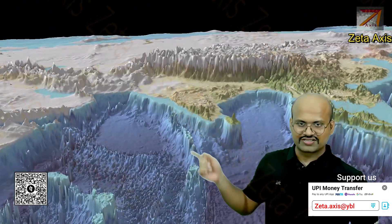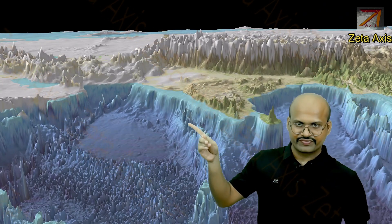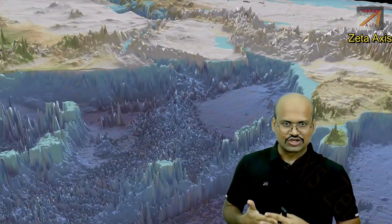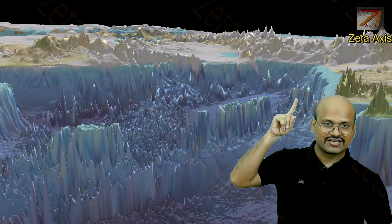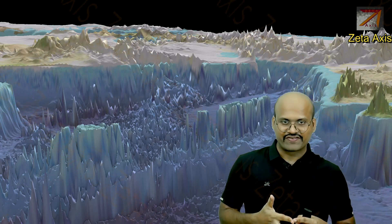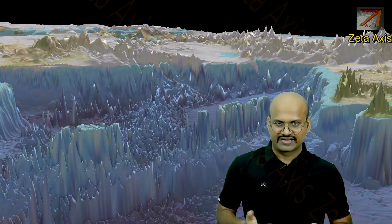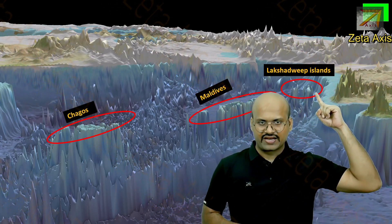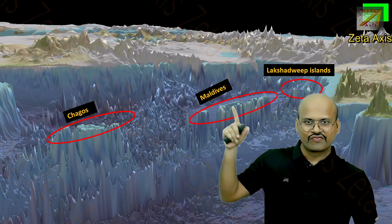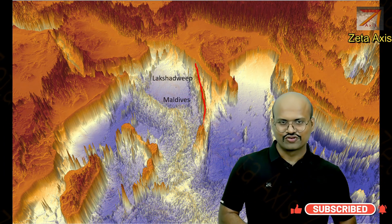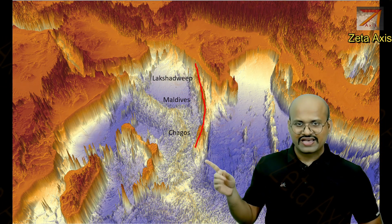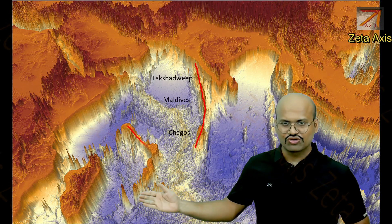Now to better understand how these islands were created, let's see the 3D view of our Indian Ocean floor. Here we can see the Indian Ocean and the Indian subcontinent, and here we can see a chain of mountains. This chain of mountains was created by the Reunion hotspot. We can see collections of large mountains at different points, and some of these mountains were able to reach above the surface of the sea, creating islands — the Lakshadweep Islands, the Maldives, and the Chagos Islands. In this view we can clearly see the volcanic chain of mountains created by the Reunion hotspot located here.